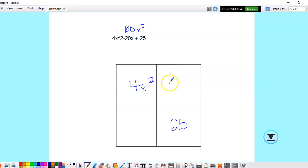And so that would be negative 10x and negative 10x.